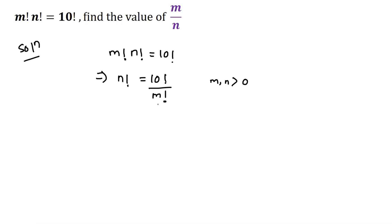So we need to test for which value of m we are getting a perfect factorial value. Before that, let's just write down the factorial values of numbers 1 to 10.